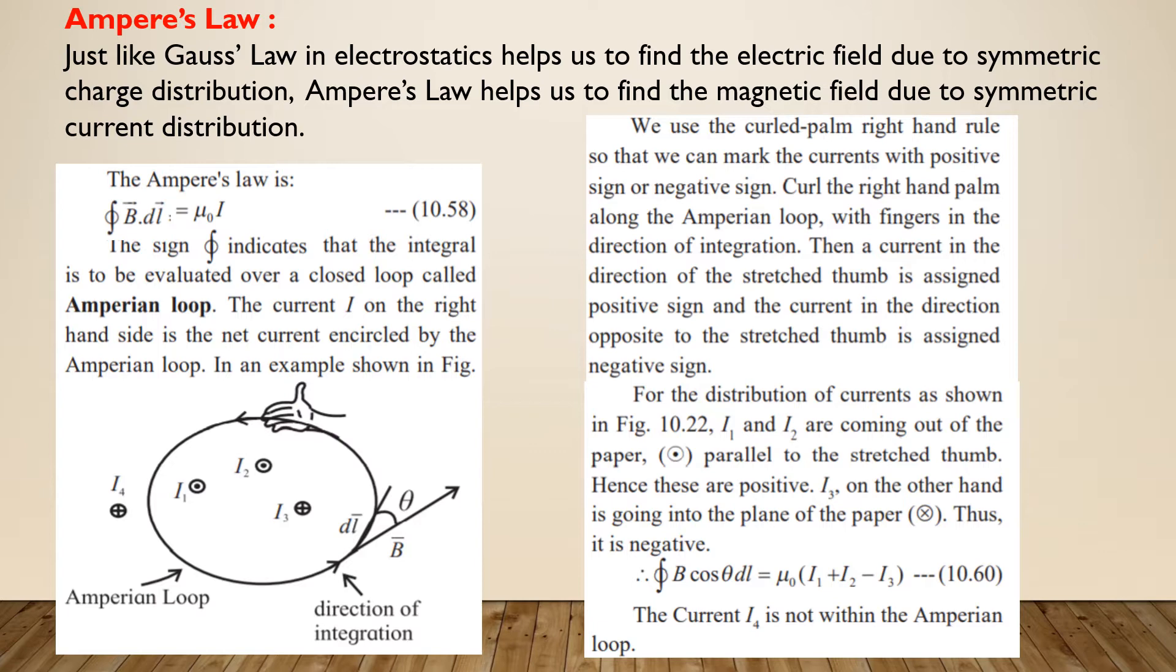The law states that the line integral of magnetic field B bar around any closed path in free space is equal to mu0 times the total current flowing through the area bounded by that loop. Mathematically, the closed integral B bar dot DL bar is equal to mu0 I, where I is the net current.